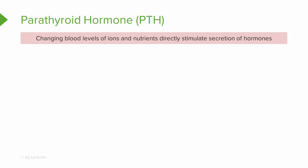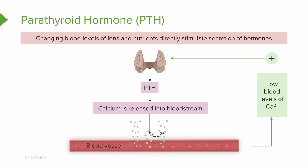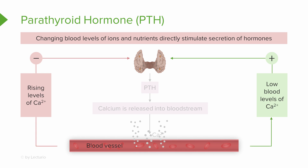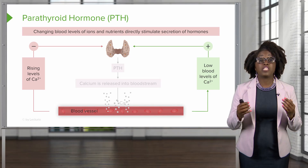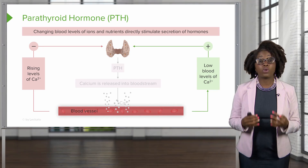With a humoral stimulus, changing blood levels of certain ions and nutrients are going to directly stimulate the secretion of hormones. A good example of this is the calcium in our blood. Declining blood calcium levels stimulate the parathyroid gland to secrete parathyroid hormone. In turn, parathyroid hormone causes the calcium concentration to rise by activating osteoclasts, which break down bone minerals and release calcium into the blood. Once there is a sufficient amount of calcium in the blood, the stimulus is removed and parathyroid hormone secretion is also removed.